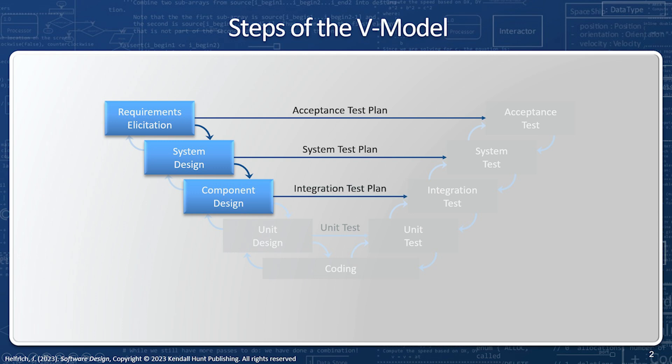Once our component design is finished — or more likely, finished enough — then we come up with an integration test plan. In other words, all the different sub-components we've identified in our component design are going to interrelate with each other. How can we test this interrelation? For example, if class A, B, and C within the component relate to each other closely, we want to find a way that we can test the interrelation between those classes, and that would be our integration test plan.